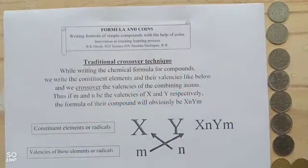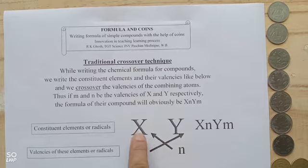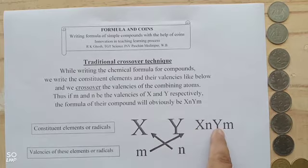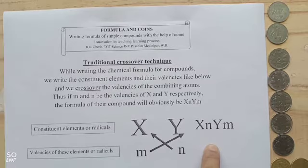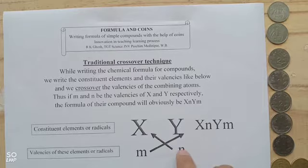is very effective at the junior level. For writing the formula of simple compounds, we generally use the traditional crossover technique. Now, what is the crossover technique? Suppose X is one element and Y is another element, the valency of X is m and the valency of Y is n. We just cross the valencies, so the formula will be XnYm. This is the traditional crossover technique. Sometimes in junior classes, students are very confused about this crossover technique.